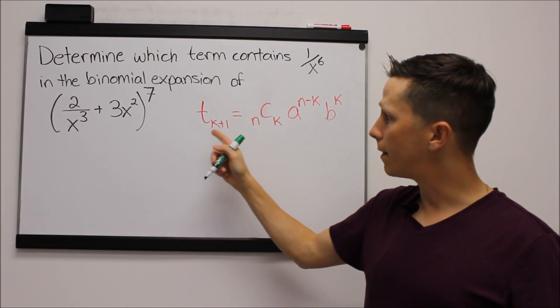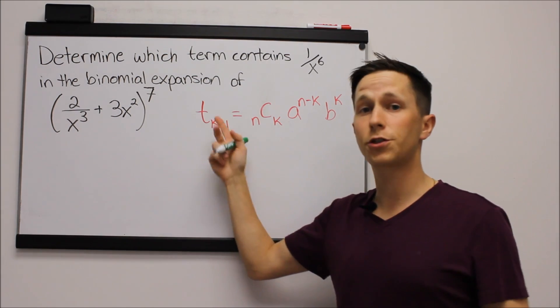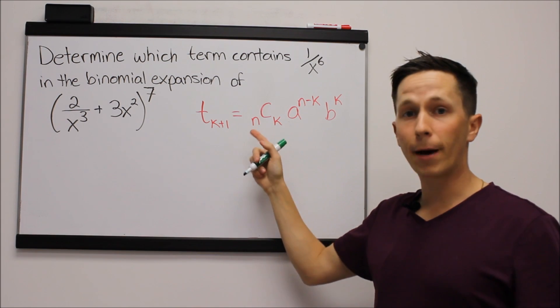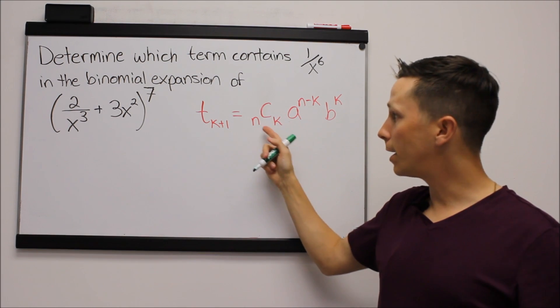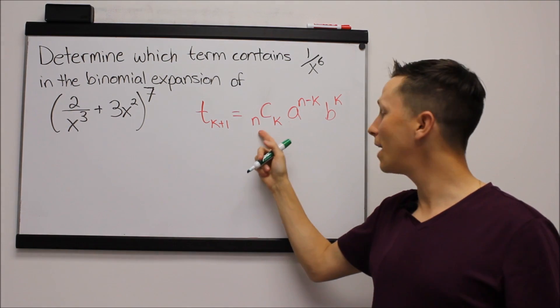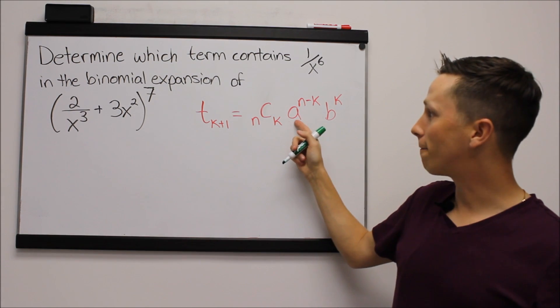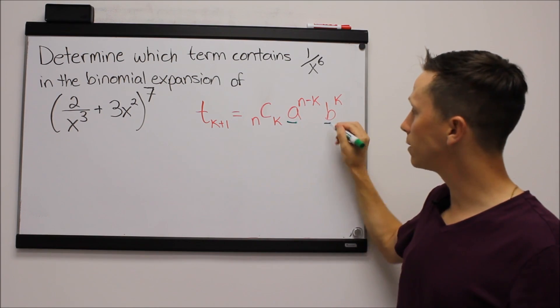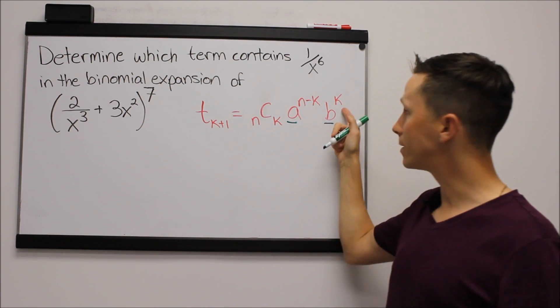Let's walk through this. This says that the k plus first term, so whichever term it is, is found by taking the combination n choose k, and then the first term a raised to the power of n minus k, and the second term within the binomial raised to the power of k.